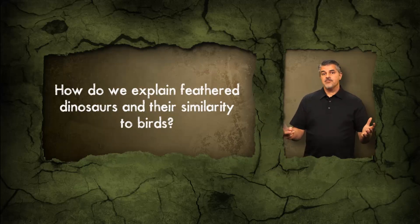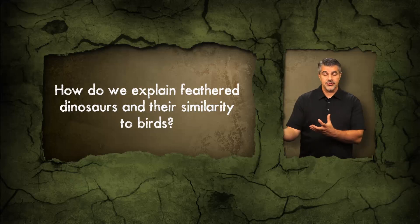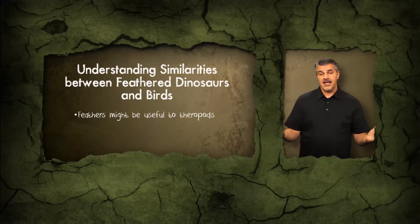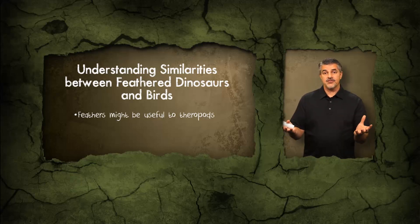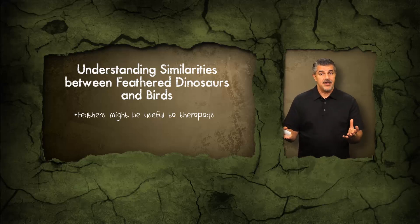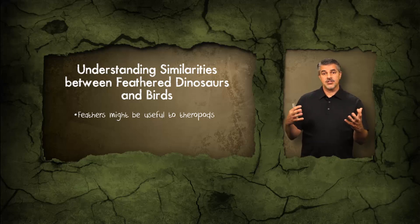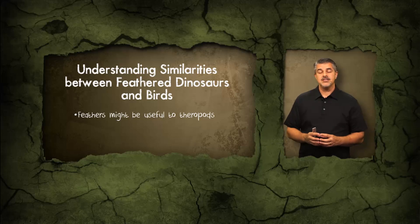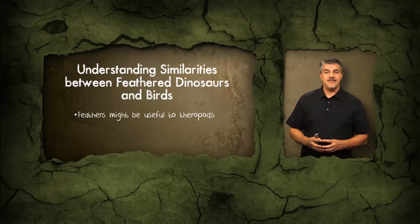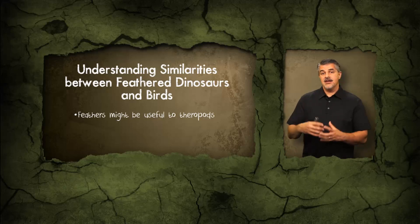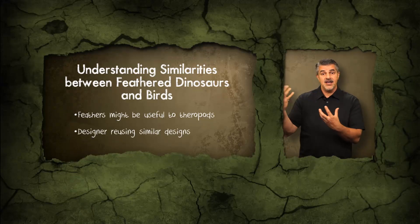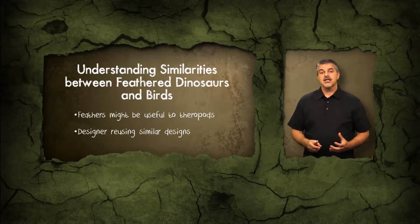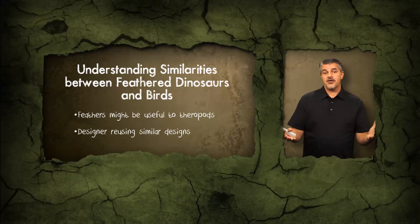How do you explain these feathered dinosaurs and their superficial similarity to birds? It could very well be that these feathers play an important role in dinosaur biology — perhaps serving as insulation, helping to stabilize bipedal dinosaurs when they move, providing aerodynamic support, or helping them balance while running at fast speeds. There are a number of possible reasons why these dinosaurs may have feathers that would reflect design, not necessarily an evolutionary connection. In fact, if dinosaurs and birds were produced by a creator, you'd expect that creator to use similar designs in organisms with similar anatomical and physiological requirements. These feathered dinosaurs can be accounted for within a creation model paradigm.